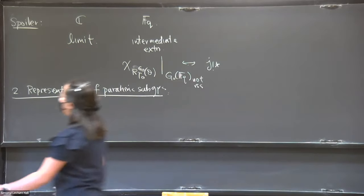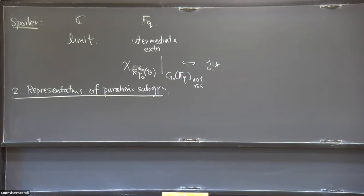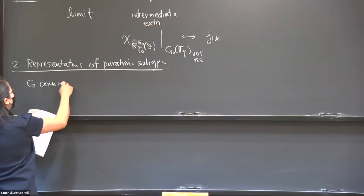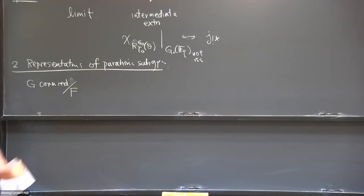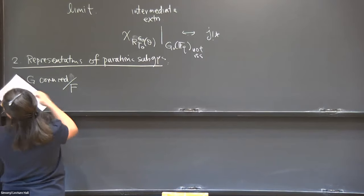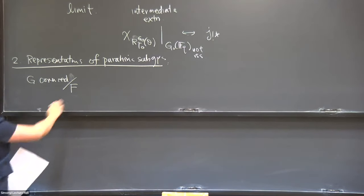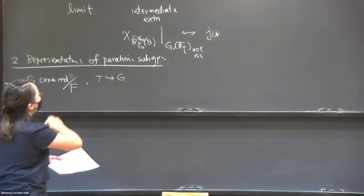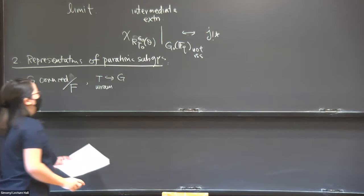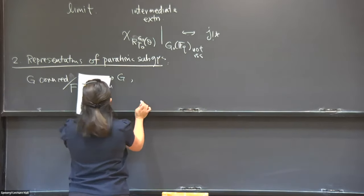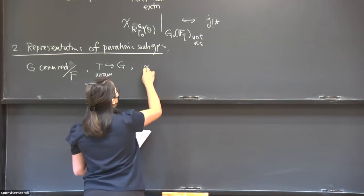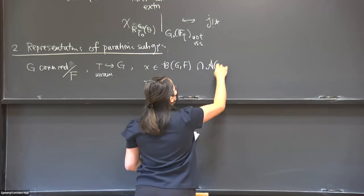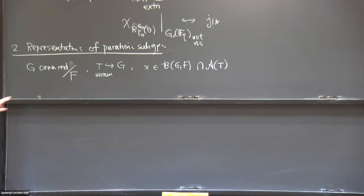The spoiler here is that we hope to do everything from the previous board also in this context. The setup: I take a connected reductive group over a non-Archimedean local field F, and q will be the size of the residue field. I will always take an unramified maximal torus — meaning one that splits over an unramified extension.